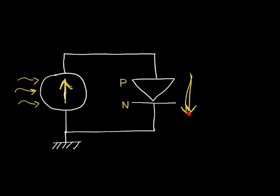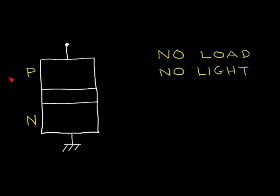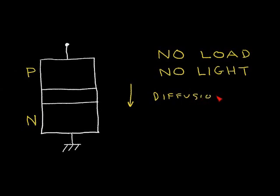So why do we have two currents associated with this diode? We just have one diode but two currents. Let's investigate this. Here I have a PN junction diode with no load and no light shining on it. What happens is I get two currents: a diffusion current in one direction and a drift current in the other direction.